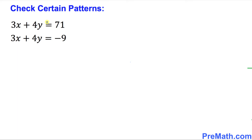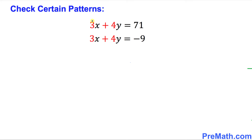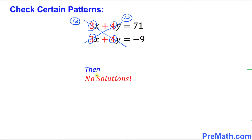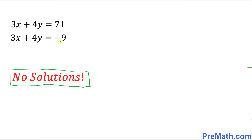So x equals 0 and y equals negative 1 over 12 is a solution to this given system of equations. Here is our next example. Once again, we are going to check a certain pattern. Here I have highlighted in red the coefficients of the x variable as well as the coefficients of the y variable. Cross multiplying: 3 times 4 gives 12, and the other way around gives 12 as well. When these two numbers are the same in this case, we have no solution to this system of equations.